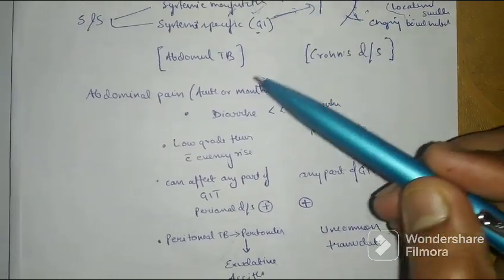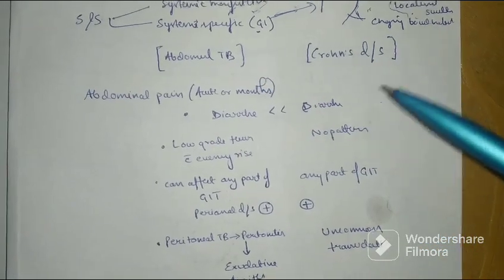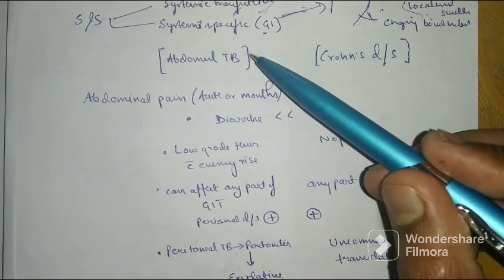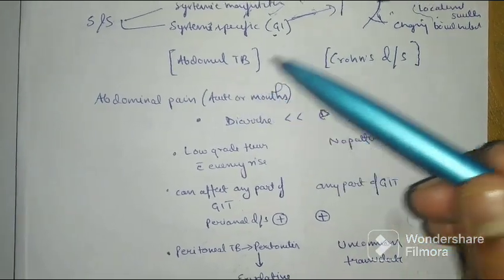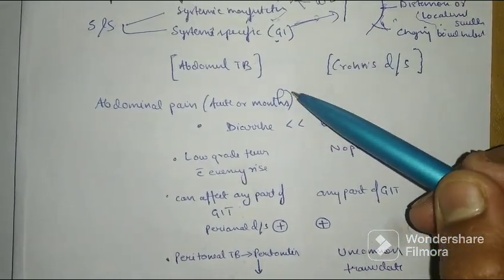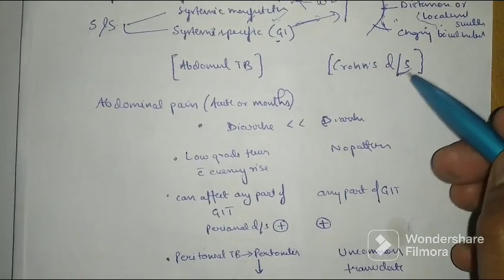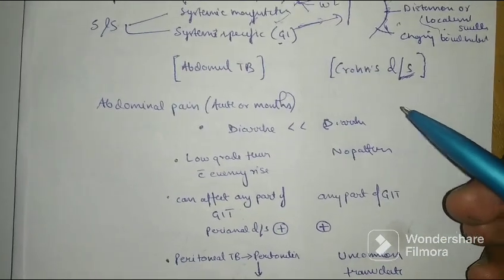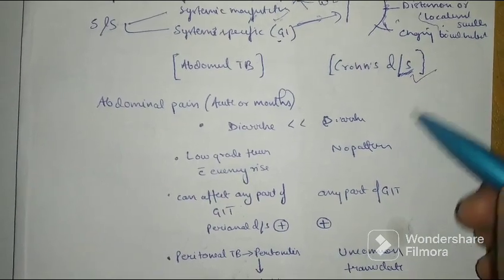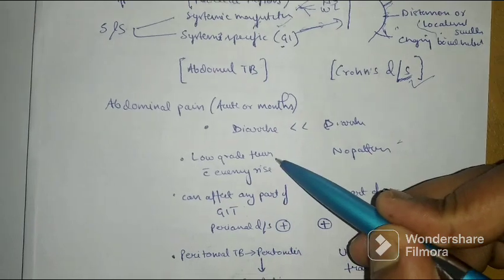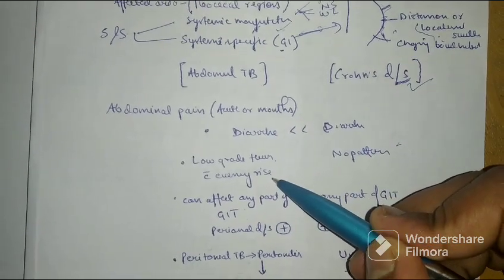Abdominal TB has abdominal pain and Crohn's disease has abdominal pain. Abdominal pain in the case of abdominal TB may be acute or may be from months. Diarrhea is more predominant finding in the case of Crohn's disease. Fever in case of Crohn's disease has no pattern whereas fever in abdominal TB will show low grade fever and evening rise of temperature.